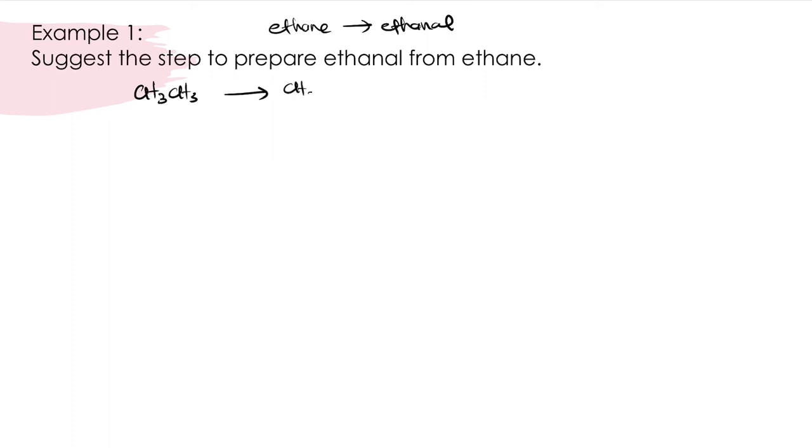We want to produce ethanol CH3C=O-H. Our starting reagent is ethane, and for alkane it can undergo only one type of reaction which is halogenation. So the first step, we need to do halogenation reaction.